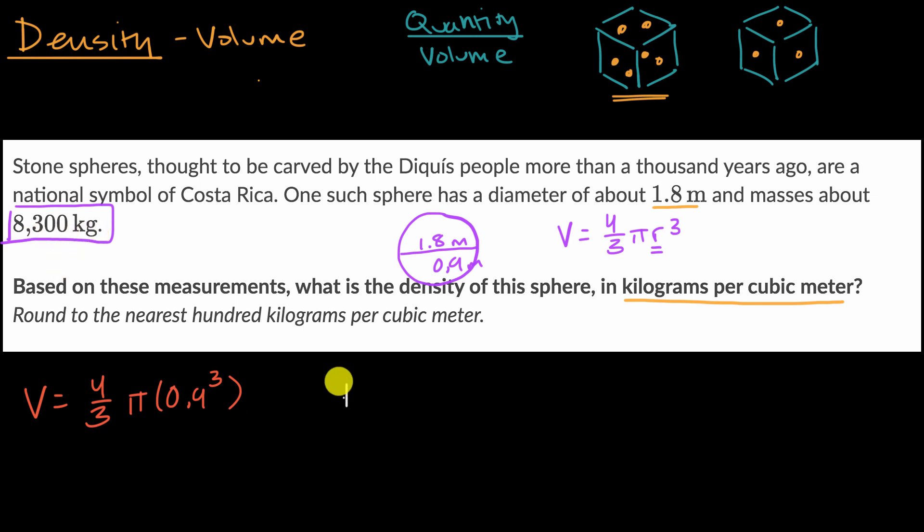So we would know that the density in this situation is going to be 8,300 kilograms per this many cubic meters, 4/3 π times 0.9 to the 3rd power cubic meters. And we're going to need a calculator for this and we're going to round to the nearest hundred kilograms.